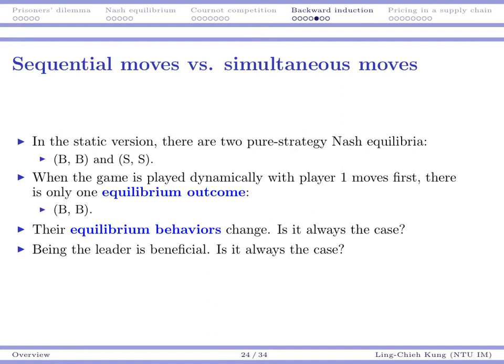So let's make some comparisons. When they play this game simultaneously, there are two pure strategy Nash equilibria. But when we choose player one to be the leader, and then they play this game dynamically, we will only get one equilibrium outcome, BB. This is not very surprising because the game rule has been changed. So the outcome has been changed. Their equilibrium behaviors change. In general, this is not always the case. You may find a game such that no matter it is static or dynamic, the result is the same. So changing the game rule does not require to change the outcome.